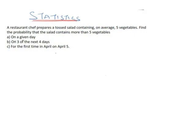This is a question we are to solve that consists of Poisson probability distribution, binomial probability distribution, and at the same time geometric probability distribution. Here is the question: A restaurant chef prepares a tossed salad containing, on average, five vegetables.